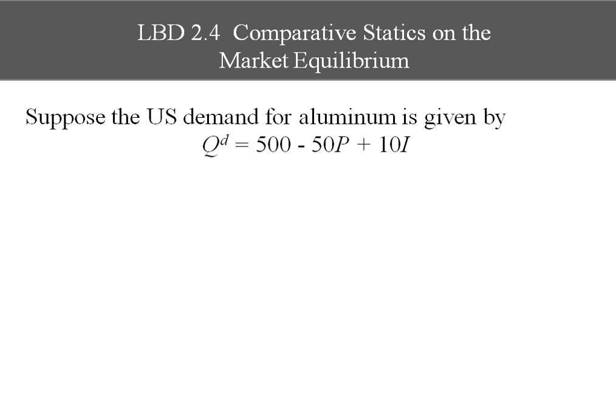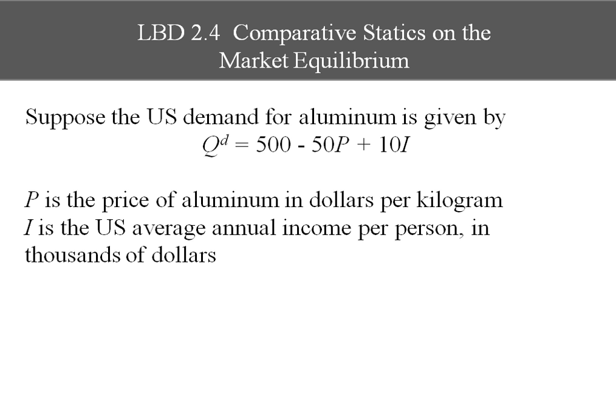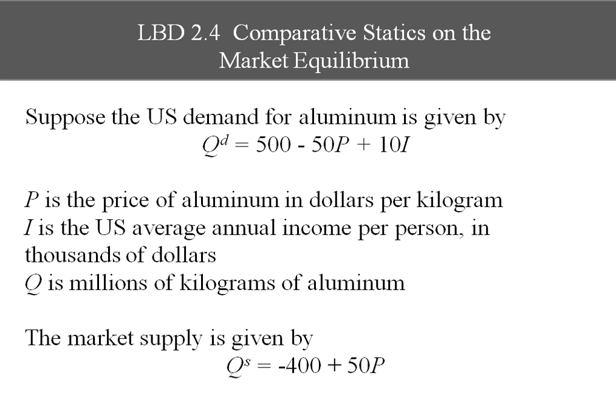Here we've got the U.S. demand for aluminum: Q^d = 500 - 50P + 10I. P is the price of aluminum in dollars per kilogram and I is average U.S. annual income per person in thousands of dollars. Q is millions of kilograms of aluminum and our supply equation is Q^s = -400 + 50P.